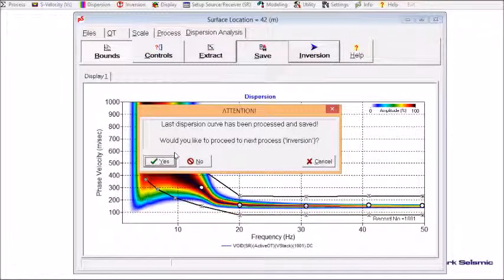Now it asks me if I want to move on to the next step, which will be Inversion. I'm not going to use this dispersion curve to generate 1D velocity profile. So I click No. Then the dispersion curve is ready.